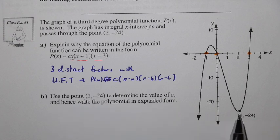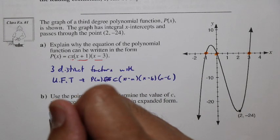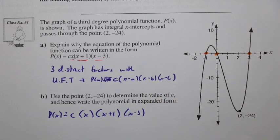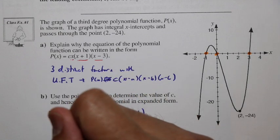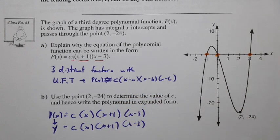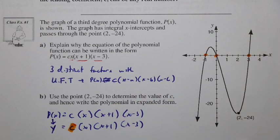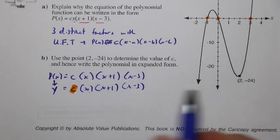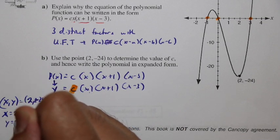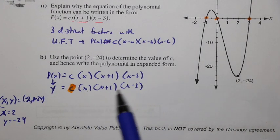Now let's use the point (2, -24) to determine the value of c. We have p(x) = c·x(x+1)(x-3), and p(x) can be treated as the output y. We're looking for c, and if we have values for x and y, this becomes an equation with just one unknown. Using the coordinate (2, -24), we substitute x = 2 and y = -24 into the equation.